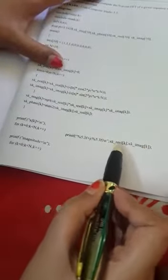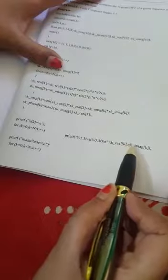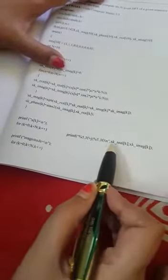Let us suppose k value is 0, so you will get the value as x real 0 plus j times x imaginary 0. Similarly when k becomes 1 you will get xk underscore real 1 plus j times xk imaginary 1, 2, 3, because n is given as 10, so all the 10 points you can get the values.